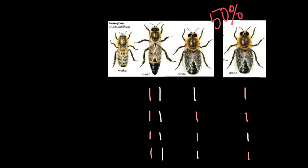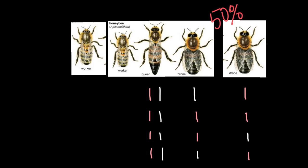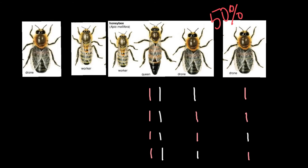Now let me explain what's going on with the female progeny of this queen. Imagine that this worker is a daughter of this queen. Let me introduce another worker that is going to be a sister of this worker, so this queen would be the mother of both these workers. Here is also another drone that is going to be the father of these two females.